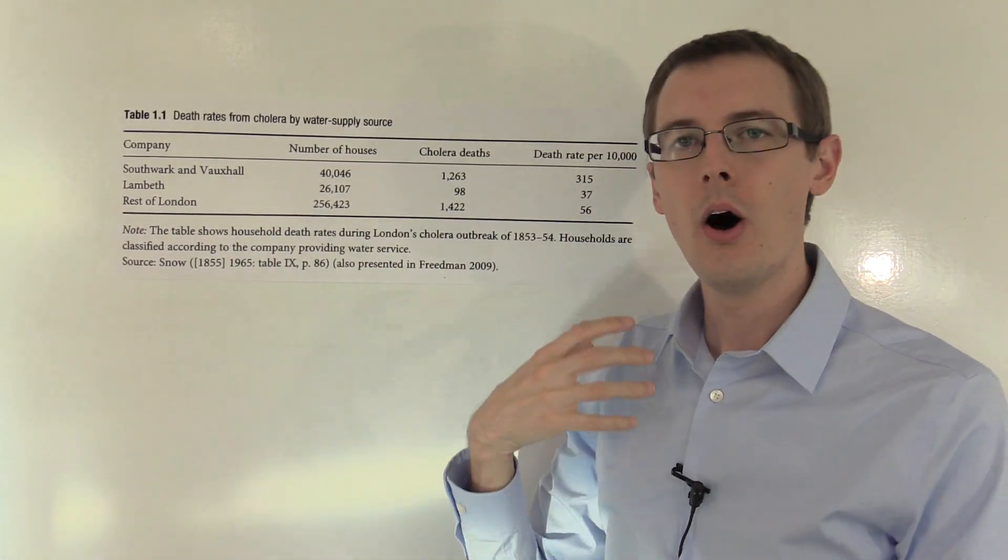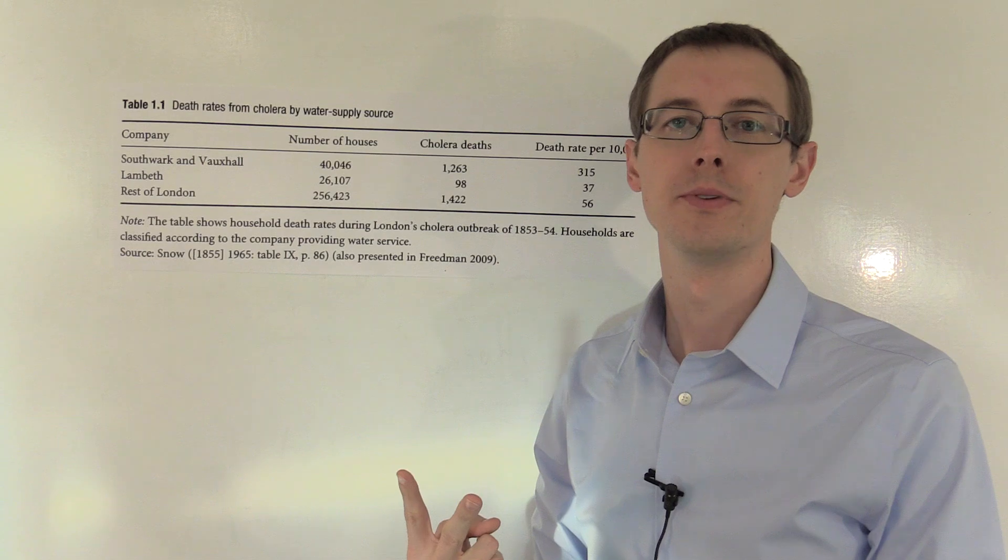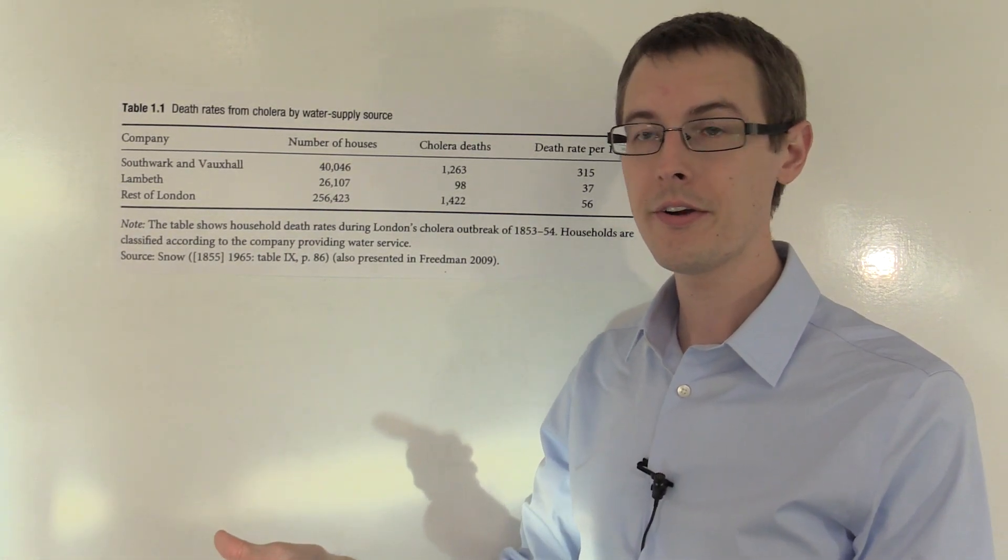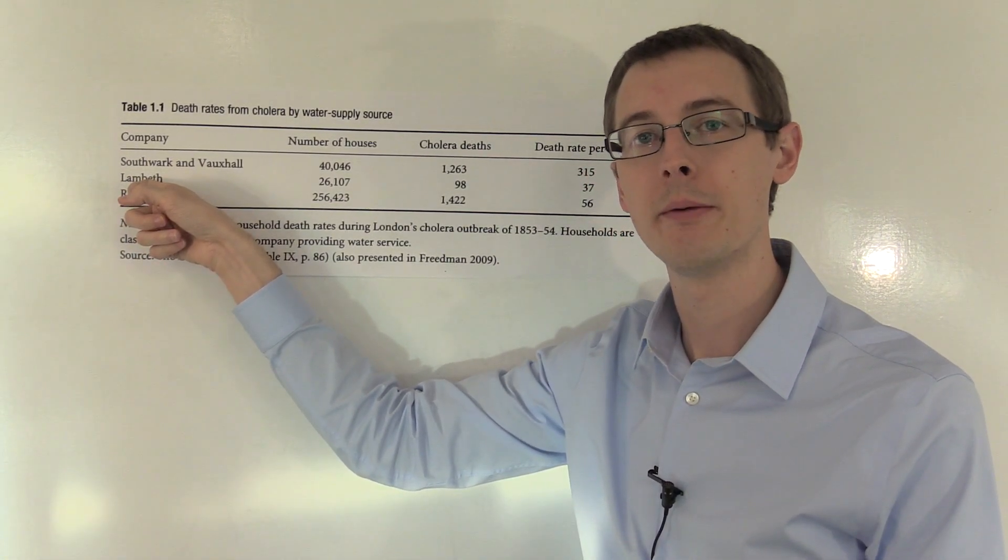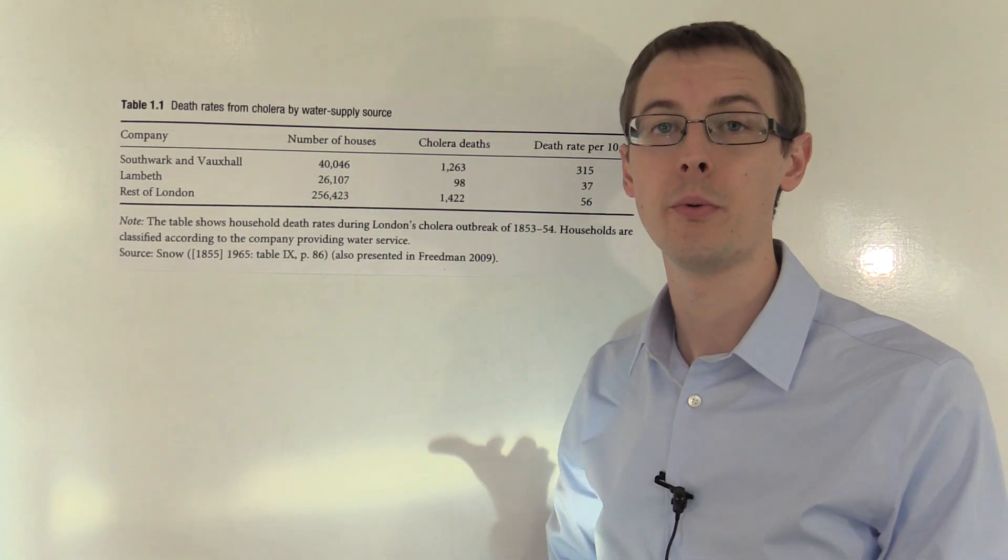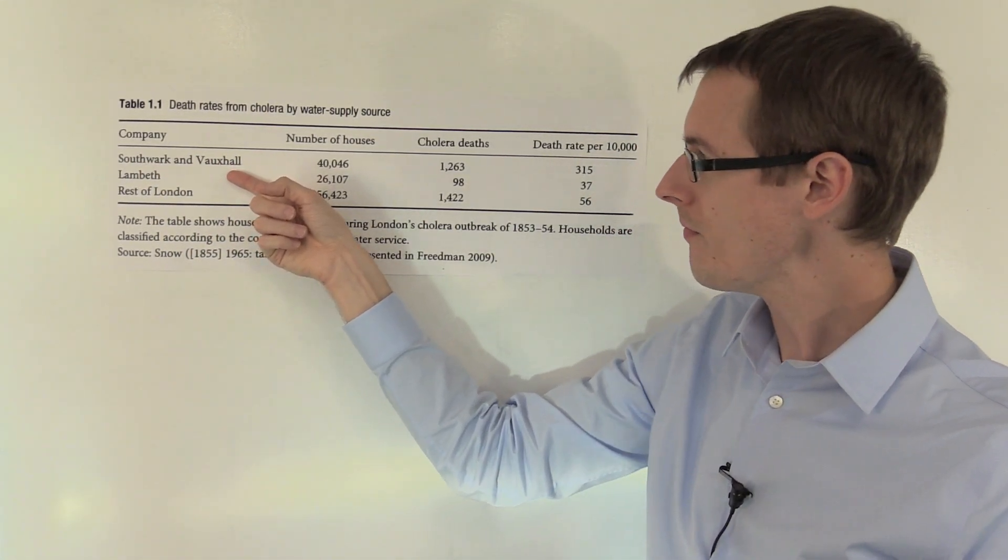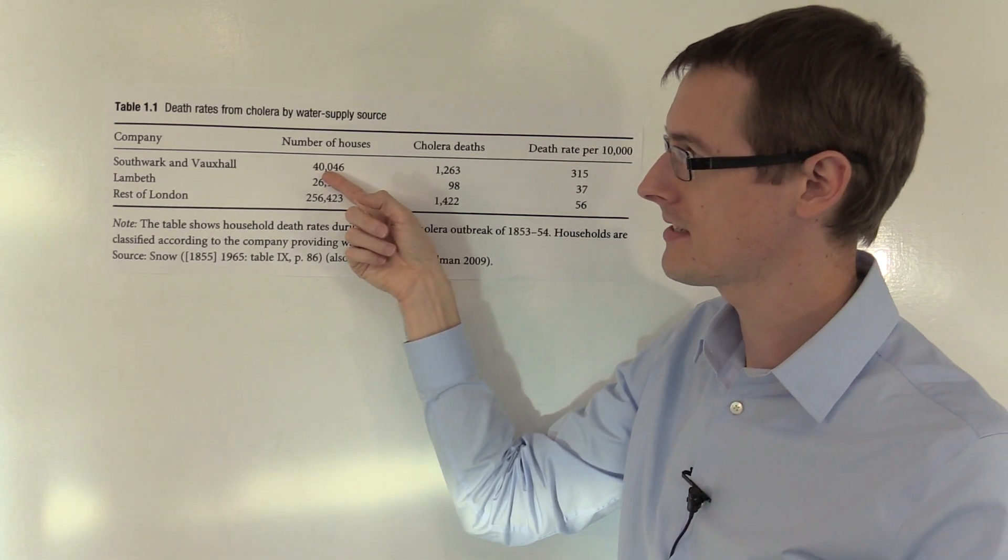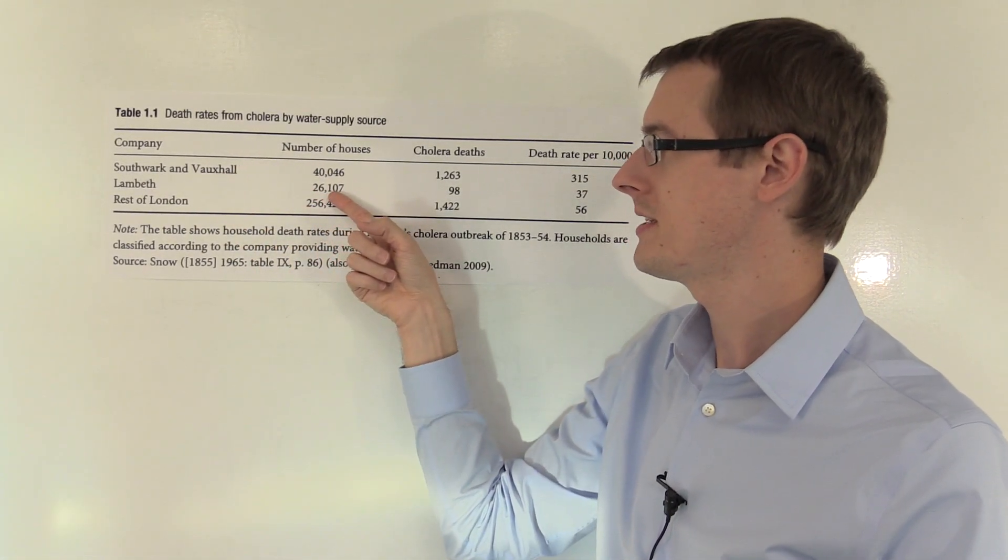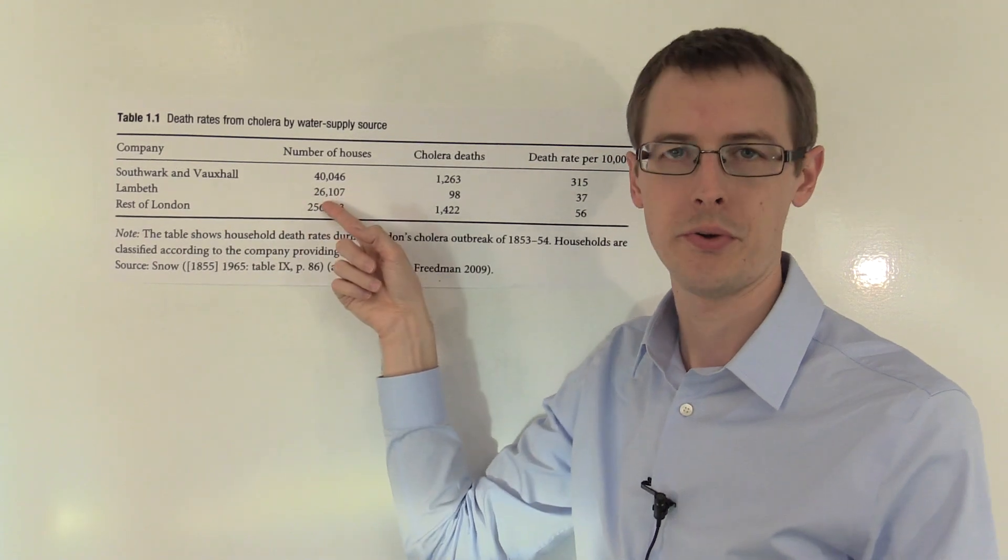The households in the city were split into two groups. Those who got clean water because their water was provided by Lambeth, and those who got dirty water because their water was provided by Southwark and Vauxhall. There are about 40,000 houses in the Southwark and Vauxhall group, and about 26,000 in the Lambeth clean water group.